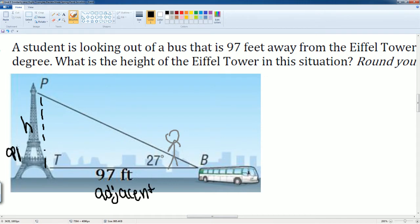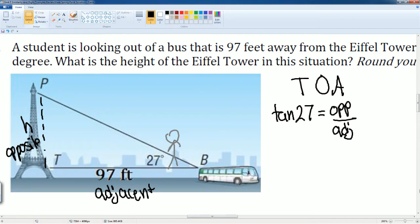We know that opposite over adjacent, which is your TOA. So tan of this 27 degrees is going to be equal to the opposite over the adjacent. Now we can make that substitution in.